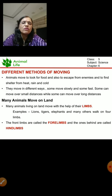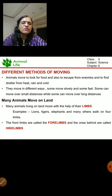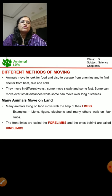The animals which move on the land move with the help of their limbs, like lion, tiger, elephant, etc. The front limbs are known as forelimbs and the limbs at the back are known as hind limbs. These animals mostly use all the forelimbs and hind limbs to move.